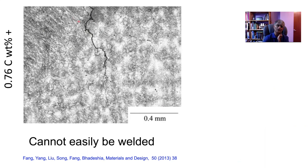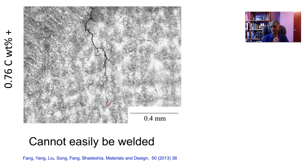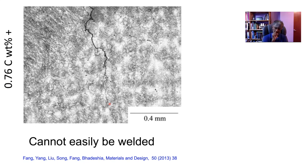Here is a weld fusion region with columnar grains, where you get coarse austenite grains of the order of 40 or 50 micrometers — notice this scale is 400 micrometers — and then you get cracks. So although we want to use high carbon to obtain high strength, if you have to join the steel, you are limited in the amount of carbon. The common way to decide whether a steel is weldable is to limit the carbon equivalent to about 0.4 weight percent.